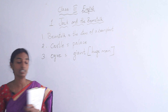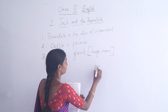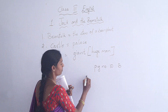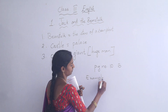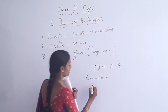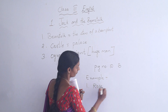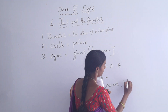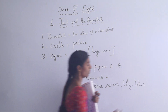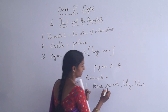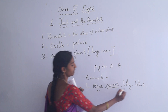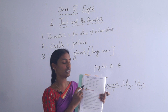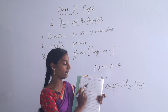I will show you an example. Suppose I write: rose, carrot, lily, lotus. What is the different word here? Carrot is the different word — why? Because rose, lily, and lotus are flower names, and carrot is a vegetable name. Like that, you have to find out the word that doesn't fit in and underline that word.